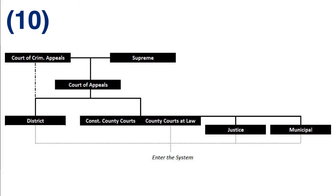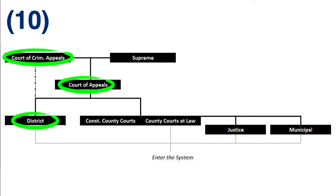According to CCP 18.01(d), a subsequent search warrant for mere evidence may be issued to search the same person, place, or thing subjected to a prior mere evidence search warrant only if the subsequent search warrant is issued by a judge of a district court, a court of appeals, the court of criminal appeals, or the Texas Supreme Court.